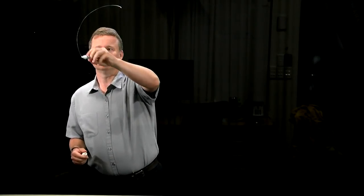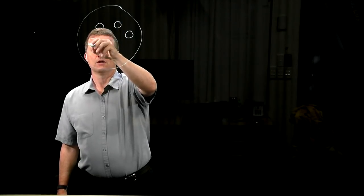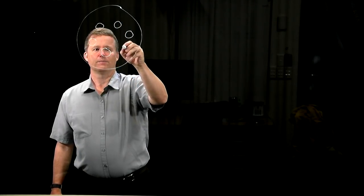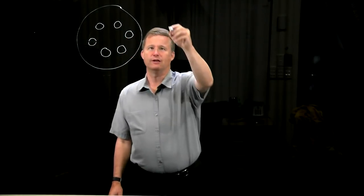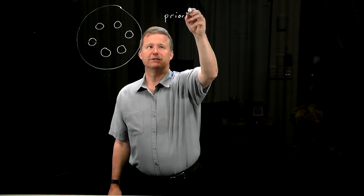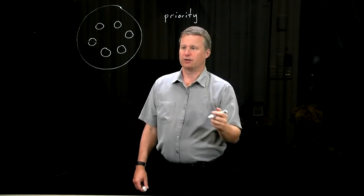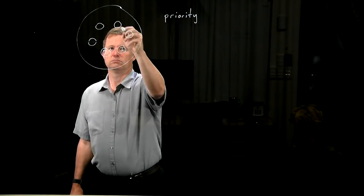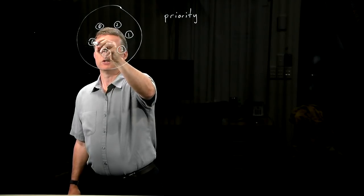We're going to look at the idea of a priority queue. So a priority queue is just an abstract data type, which we think of as a big container, and it contains elements. Now the important thing is this: each element has what is called a priority. It has a particular real number, let's say, associated with it, which is its priority.